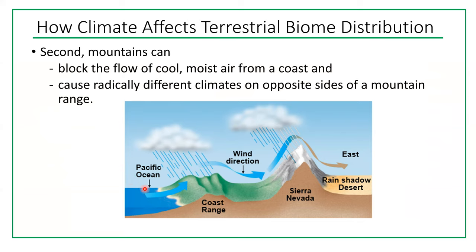The second way mountains affect climate is that they block the flow of cool, moist air from the coast, causing radically different climates on opposite sides of a mountain ridge. The Sierra Nevada mountains block cool, moist Pacific Ocean air, so the other side has a completely different biome — very often a desert, since deserts are really defined by low precipitation rather than temperature.